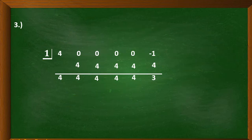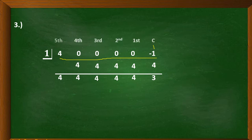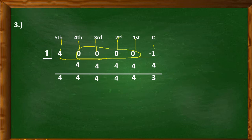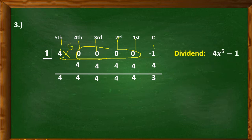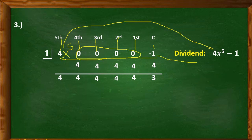For our last example, we have this given — there are many zeros. This is our dividend part. The last number corresponds to the constant term, then the first degree term, second degree term, third degree term, fourth degree term, and fifth degree term. The fourth, third, second, and first degree terms are all zeros, so we are not going to write them. For the 4, we have x to the power of 5. So our dividend is 4x to the power of 5 minus 1.